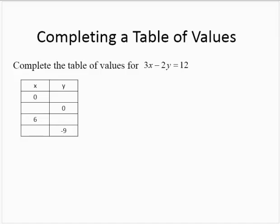Complete the table of values for 3x minus 2y equals 12. Here we're given a partial table. We're asked to complete the table.